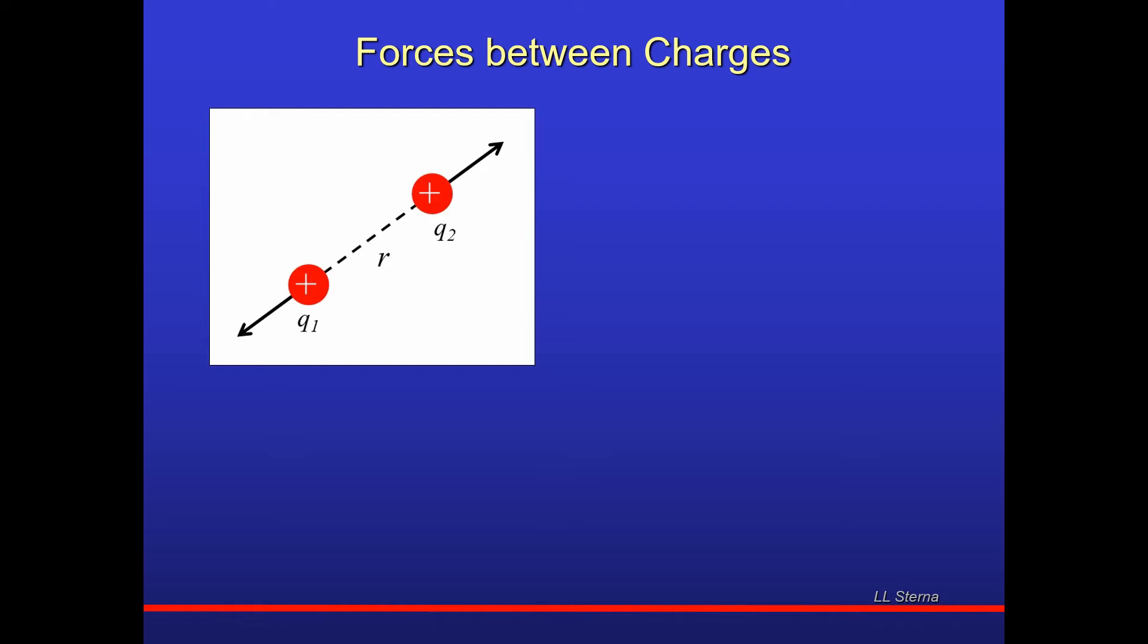Now, if you look at the picture, those black arrows indicate the two forces. Two charges that have the same sign, similar charges, either two positive or two negative, will repel each other. Therefore, in the picture you see two arrows, q1 is being repelled in one direction, q2 in the opposite direction.